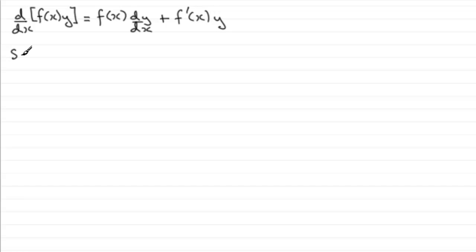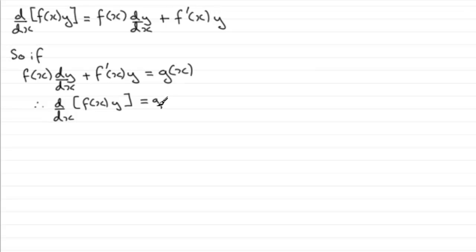So if we had a differential equation that looks like this, if we had f(x) dy/dx plus f'(x) multiplied by y, and it equals some other function of x, let's call it g(x). If I had a differential equation that looked like this, then from this result up here, I know that the left-hand side of this equation is equal to the differential with respect to x of f(x) multiplied by y. And that would equal our function g(x).